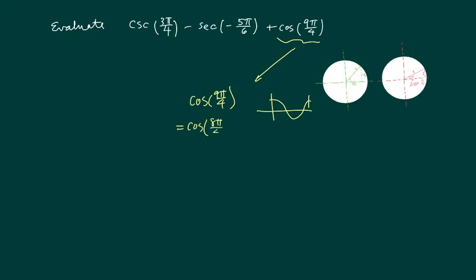So if I split this one into 8π plus π, this chunk basically goes away because this equals cosine π over 4, in that it repeats itself.